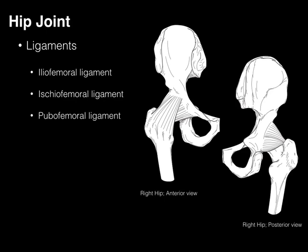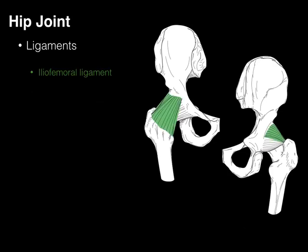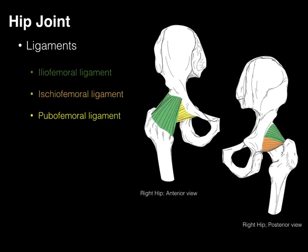To further stabilize the hip joint, surrounding the joint capsule are three ligaments named for their bony attachments. The first is the iliofemoral ligament, coursing from the ilium to the proximal femur. The ischiofemoral ligament is more posteriorly located, going from the ischium to the femur. The pubofemoral ligament courses from the pubis to the femur and is more anteriorly located. Together, these three ligaments stabilize the hip joint and limit hyperextension.